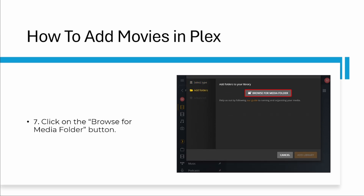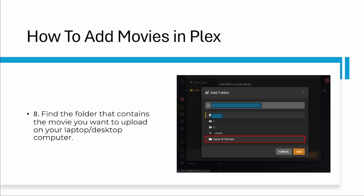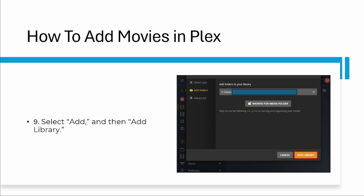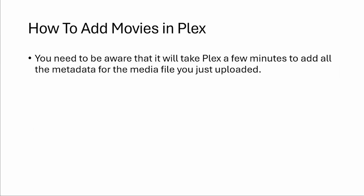Step six: go to the next button. Step seven: click on the browse for media folder button. Step eight: find the folder that contains the movie you want to upload on your laptop or desktop computer.